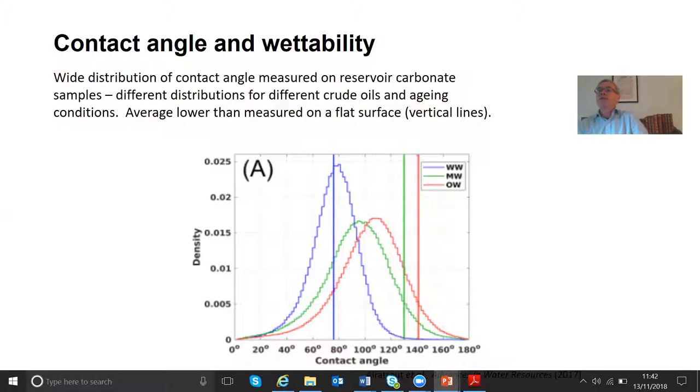When we have these two other systems where we put crude oil into the rock, actually two different crude oils at different conditions, and we've waited a long time so that the surface active components can stick. What we see is larger contact angles. One system with a range of contact angles that are around 90 degrees. One with a range of contact angles that are higher. Again the solid, the vertical lines are what we measure on a flat surface. On a flat surface now, the contact angles tend to be larger. Why?